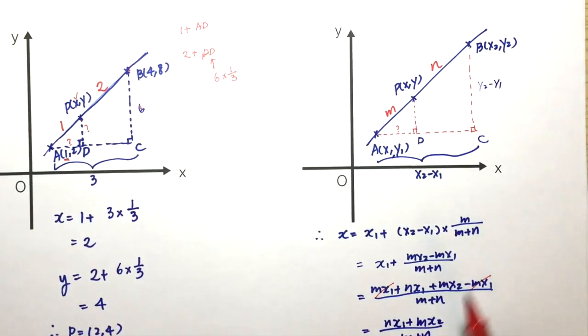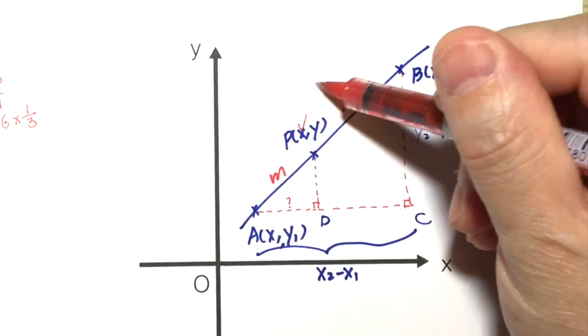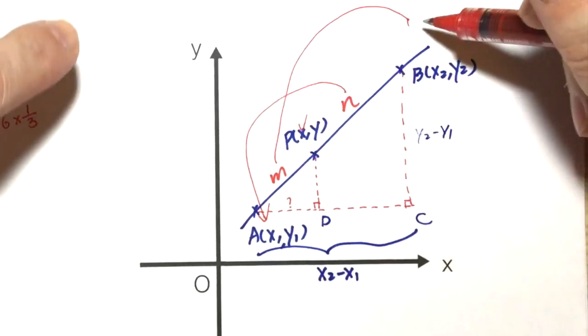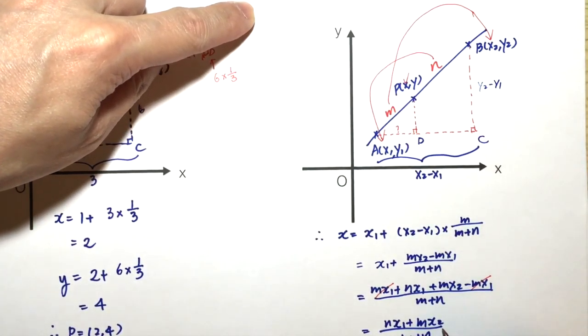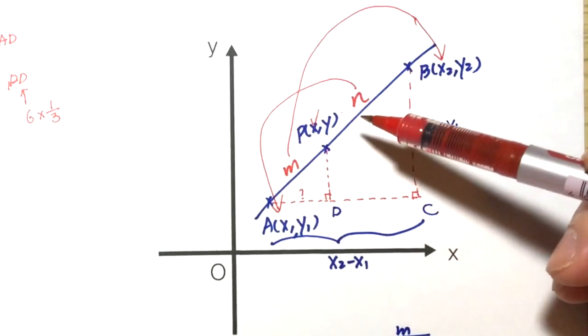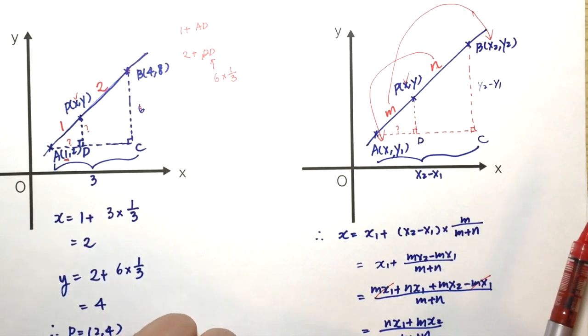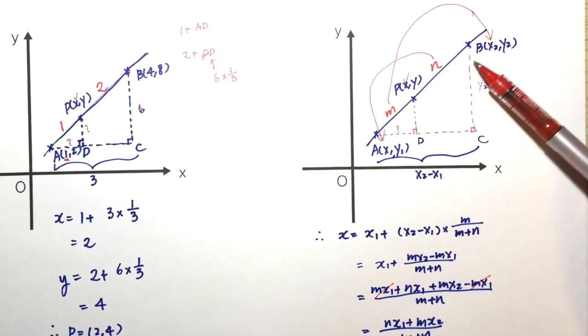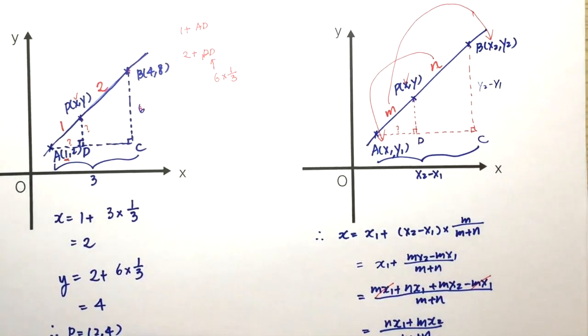This is the section formula, and actually this is very difficult to remember. For x, this part is n times x1 plus m times x2 in the numerator, and then the denominator will be m plus n. We do a cross multiplication in this way. If you don't want to use similar triangles, then you just remember this part, but in the first place you need to draw the diagram correctly.